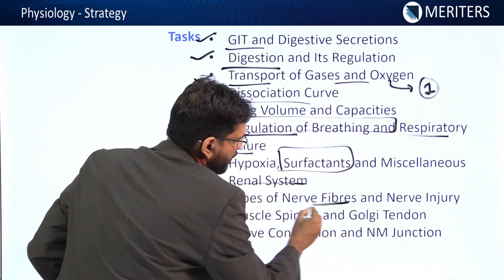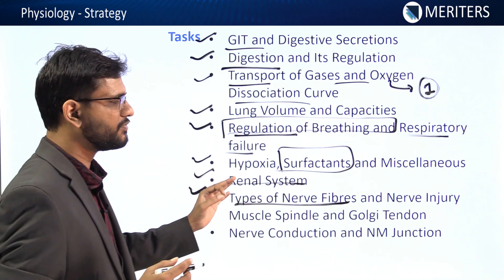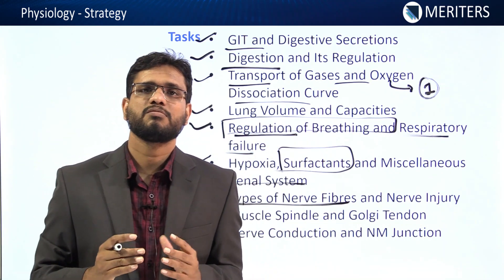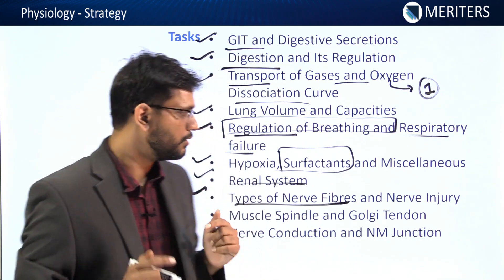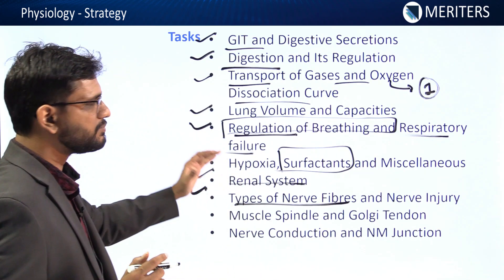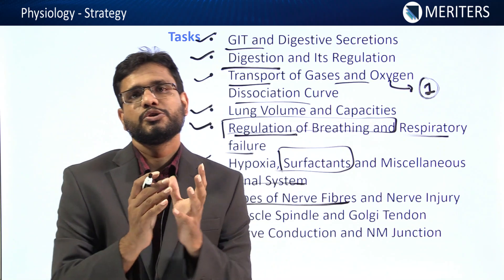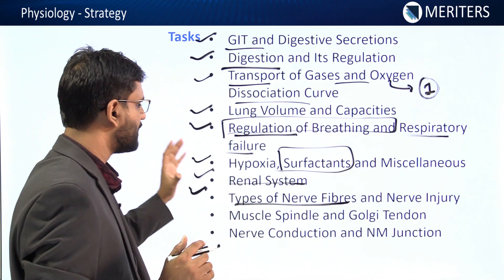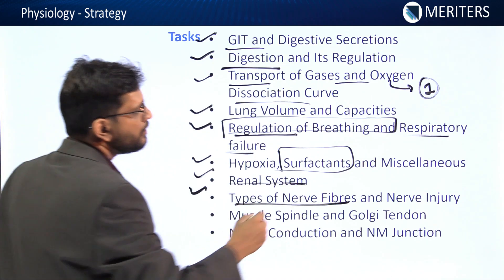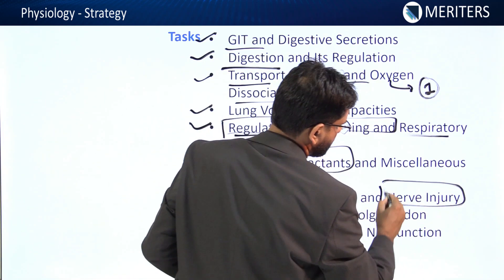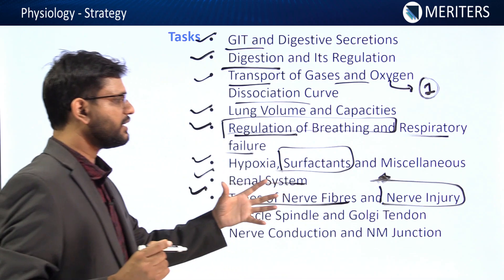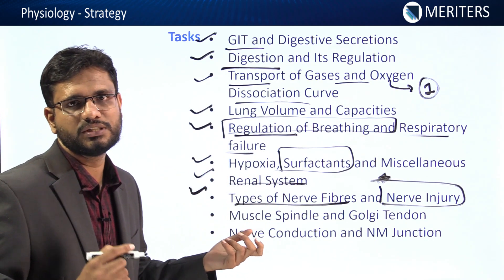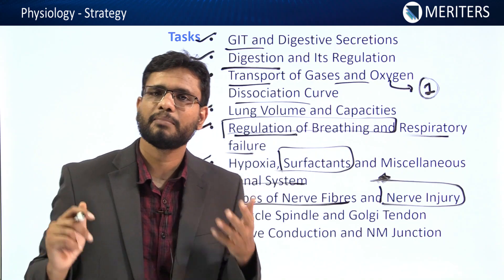Then we have types of nerve fibers. This topic is important here and also discussed in endodontics. You should know the functions of the different types of nerve fibers as well as Sheldon's classification. You should also know about nerve injury, which is more commonly part of medicine — we discuss it here in physiology so you don't have to re-read it there.